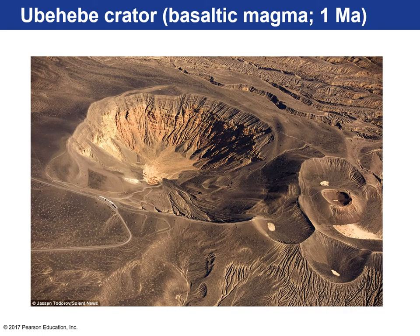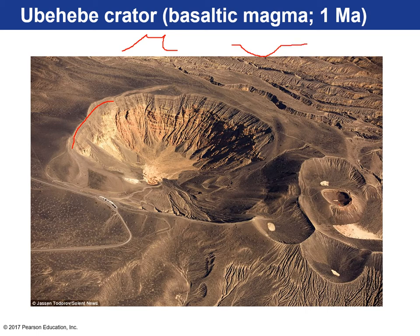Here we have Ubehebe Crater — a crater about one million years old with a few adjacent craters next to it. They're about half a mile across and are dark-rimmed with basaltic cinders. These volcanic structures are almost like an asteroid crater rather than a typical cone shape. The reason they think it formed this way is because the magma, as it approached the surface, came into contact with groundwater, causing violent eruptions, and the explosions created these crater-like features.